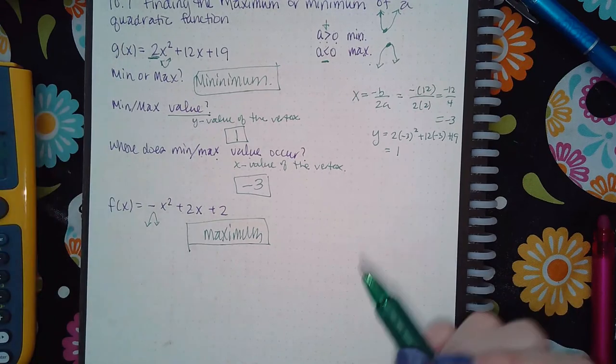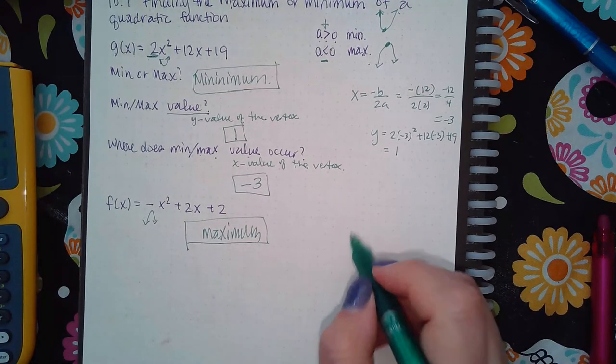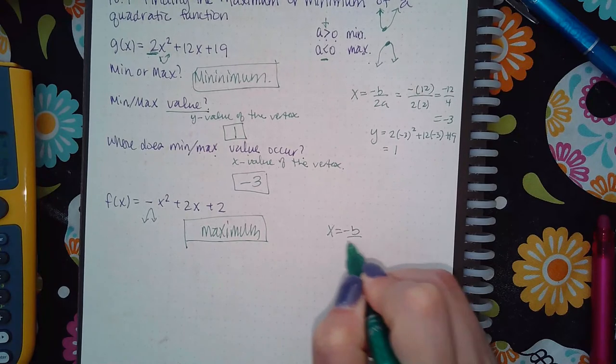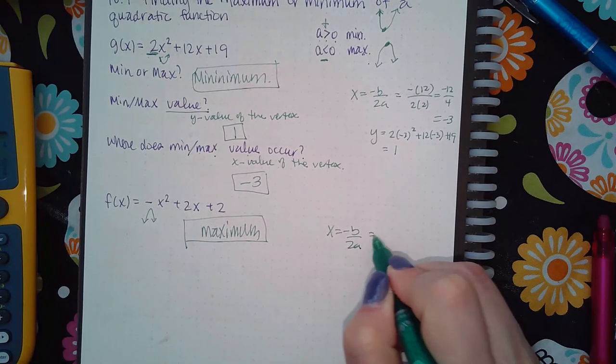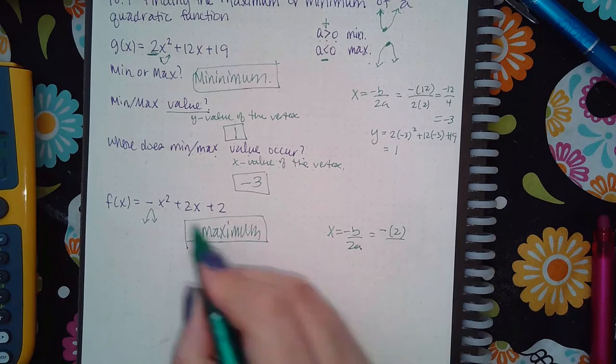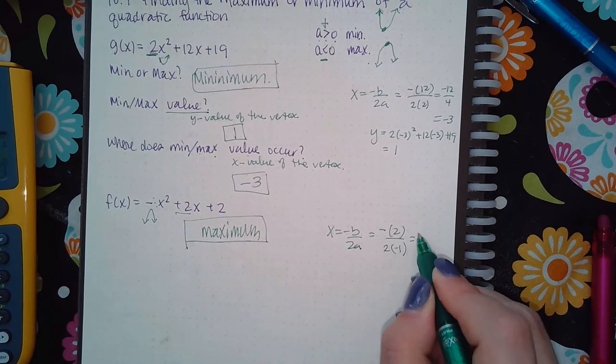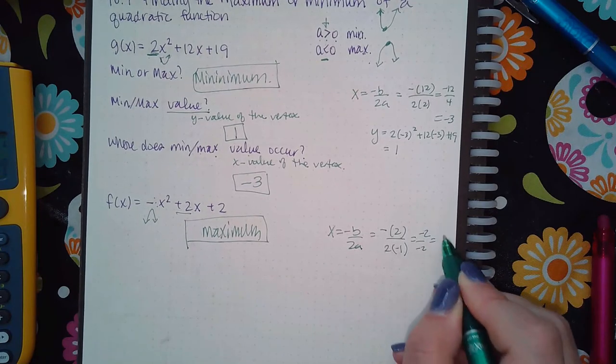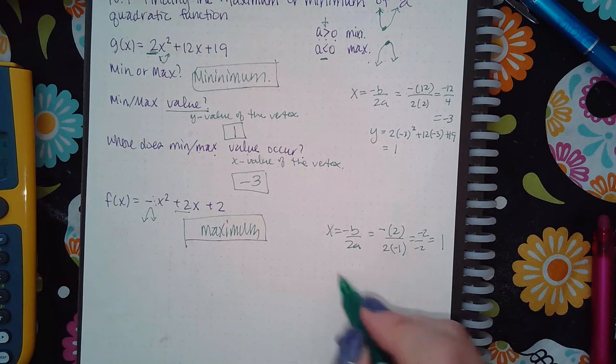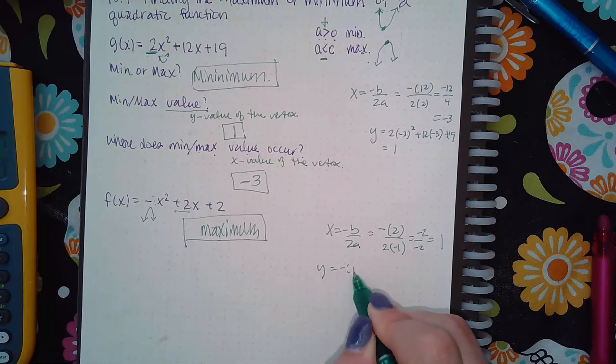It won't always be the y value first and then the x value next. They might switch it on you. So we do have to do x equals negative b over 2a just to start. So negative of a positive 2, because that's b, over 2 times a negative 1, because that's a, negative 2 over negative 2, which is a positive 1.